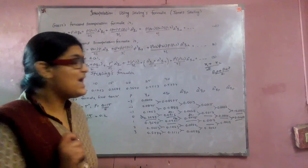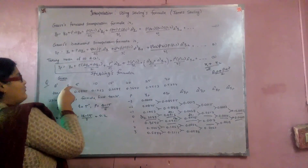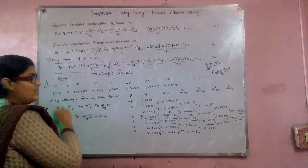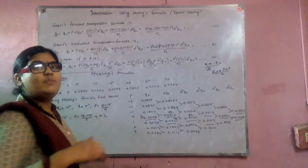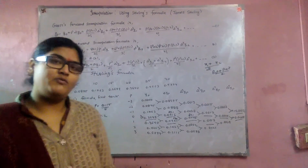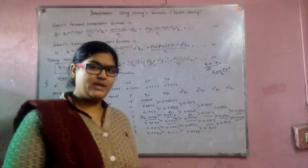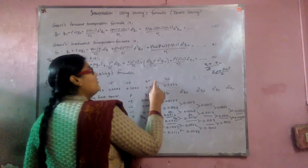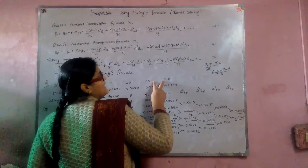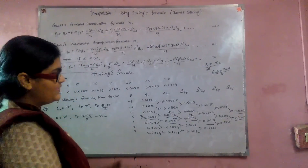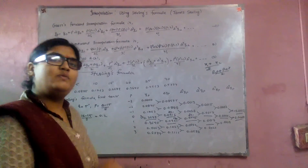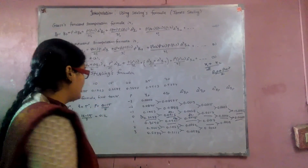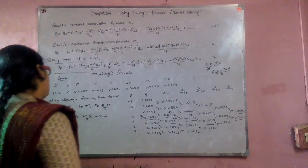If we have to find values at the beginning — like 1°, 2°, or 4° — we apply Newton's forward difference formula. If we have to find values near the end — like 26° to 29° — we apply Newton's backward formula. Here we proceed with Stirling's formula to find the value of tan(16°).